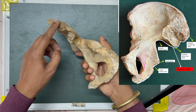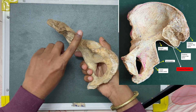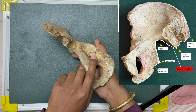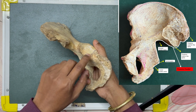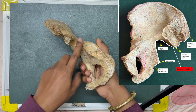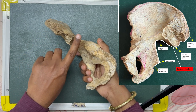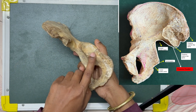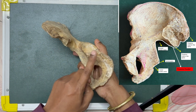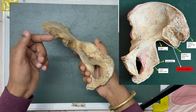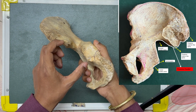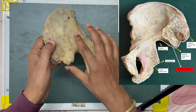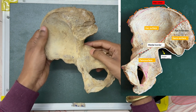The posterior border extends from the posterior superior iliac spine and runs downwards towards the lesser sciatic notch — only the upper half of the lesser sciatic notch belongs to the ilium; below that it is the ischium. Along this border are the posterior superior iliac spine, posterior inferior iliac spine, greater sciatic notch, and lesser sciatic notch.